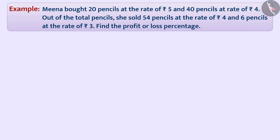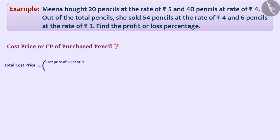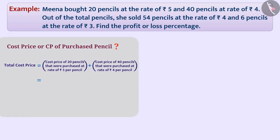First of all, we have to find the cost price (CP) of all the pencils purchased. The total cost price is equal to the cost price of 20 pencils purchased at the rate of Rs 5 per pencil, plus the cost price of 40 pencils purchased at the rate of Rs 4 per pencil, which is equal to Rs 5 × 20 + Rs 4 × 40, which is equal to Rs 100 + Rs 160 = Rs 260.